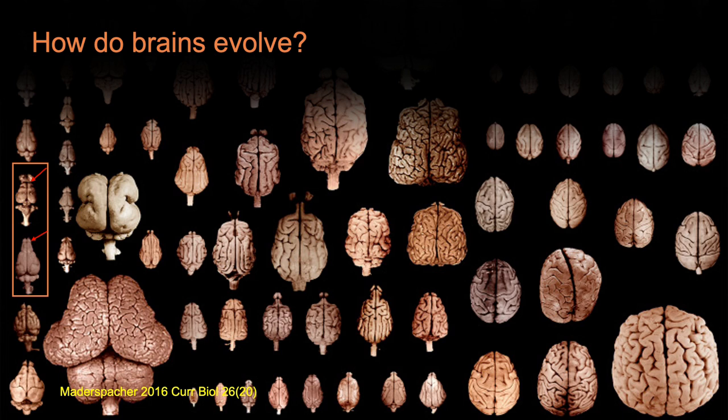So how do differences in structure relate to how the brain processes information? How does this alter behavior, and how is this diversity produced by developmental, cellular, and molecular processes? These questions are so expansive that one challenge our community faces is the diversity of approaches taken to study brain evolution.